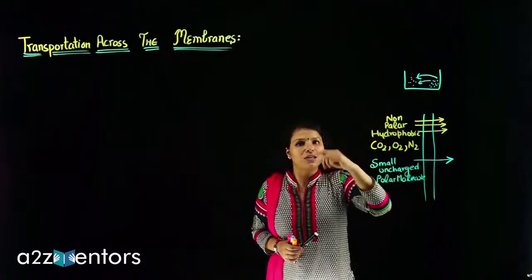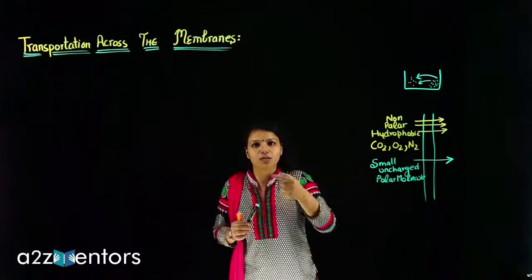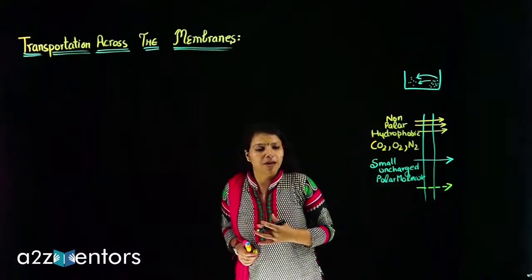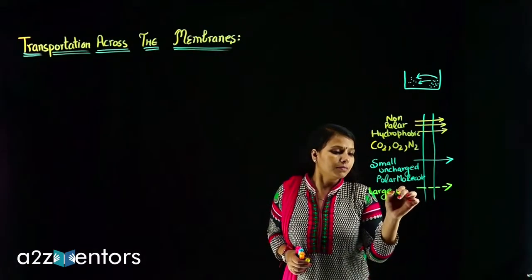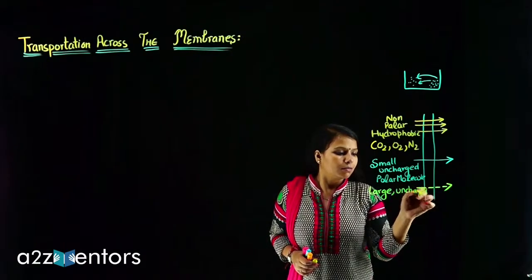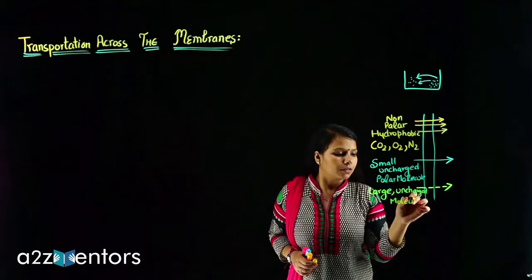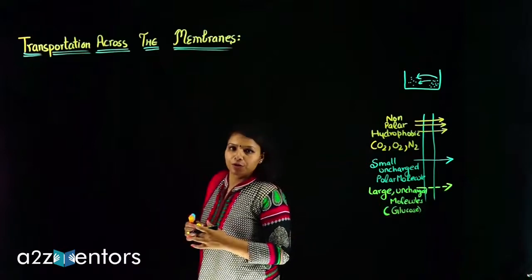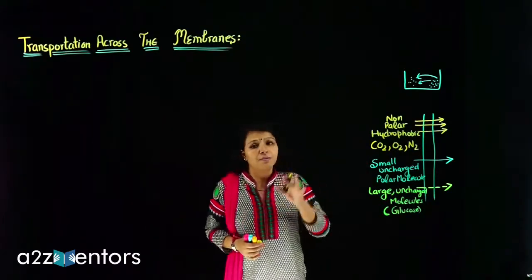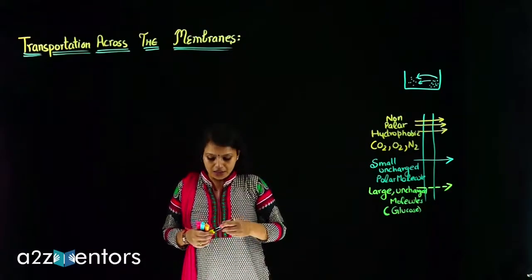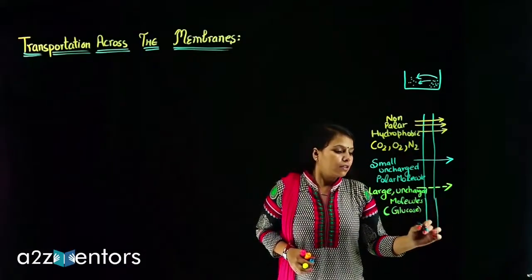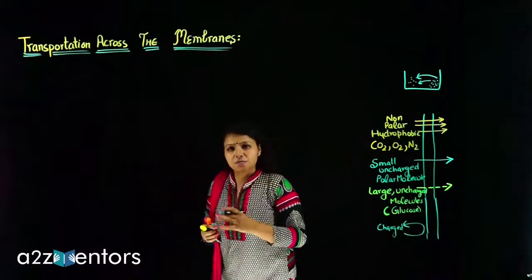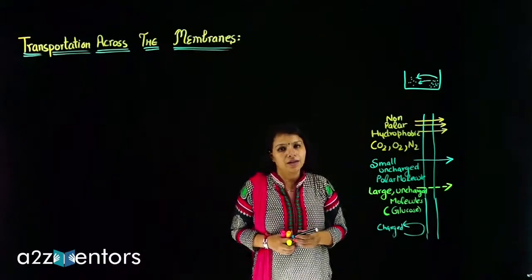This shows that the transportation of non-polar molecules is at a higher rate, but the transportation of small polar molecules is at a lower rate. The next molecules which can be transported across the plasma membrane are large-sized uncharged molecules like glucose — a carbohydrate. These can also be transported but to a very, very small extent. The things which cannot be transported at all are the charged species — the membrane is impermeable to charged species.